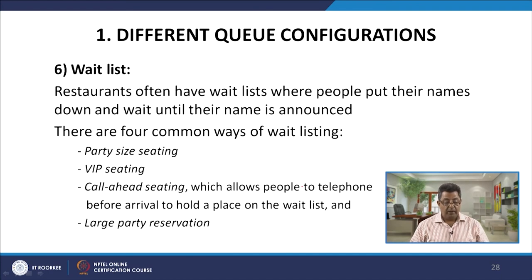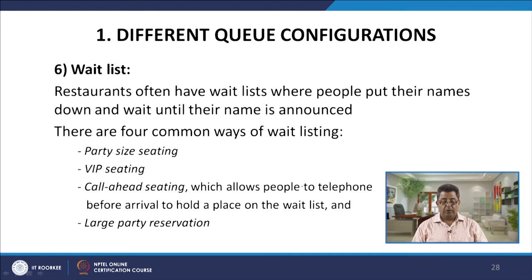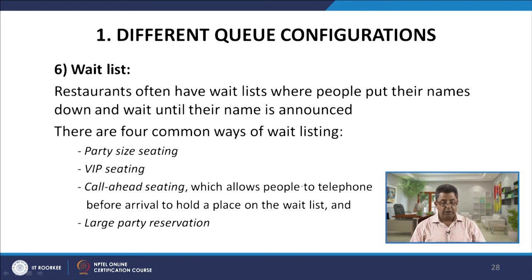The sixth configuration is a wait list. Restaurants often have wait lists where people put their name down and wait until their name is announced. There are four common ways of wait-listing: party-size seating, VIP seating, call-ahead seating which allows people to telephone before arrival to hold a place on the wait list, and large-party reservations.